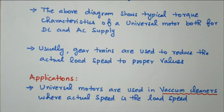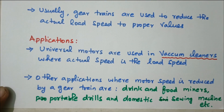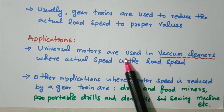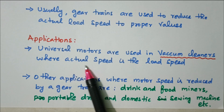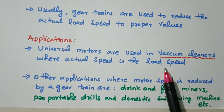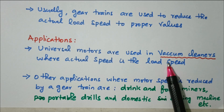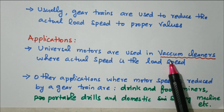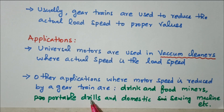Universal motors are used in vacuum cleaners where high speed is needed, where the actual speed equals the load speed. In other applications such as food and drink mixers, the gear train reduces the speed. Applications include portable drills, domestic sewing machines, and food mixers — wherever high speed operation is required.